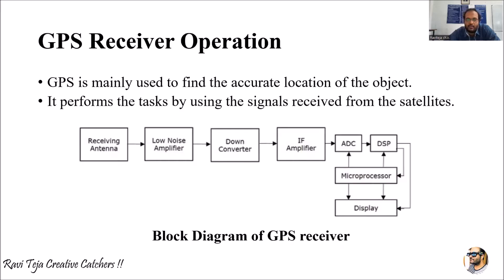Hello everyone, welcome to the course of satellite communications. In today's class we are going to learn about GPS receiver operation. GPS is mainly used to find the accurate location of an object — it can be a building, a vehicle, a person, or anything. At least three to four satellites are involved in order to find the global positioning system.